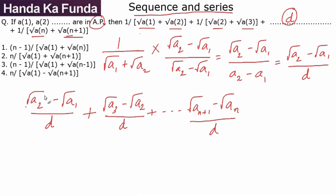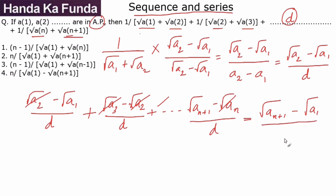When we add these terms, it's a telescoping series: √a2 cancels with the next term's −√a2, √a3 cancels similarly, and so on. We are left with (√a(n+1) − √a1)/d. However, since d does not appear directly in the answer options, we need to eliminate it.